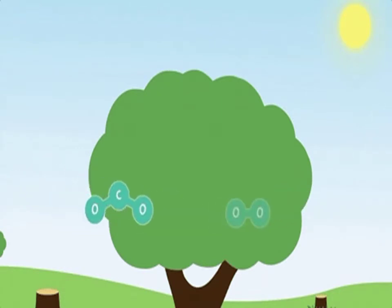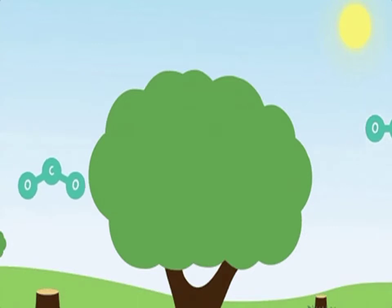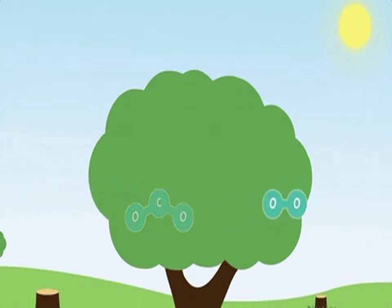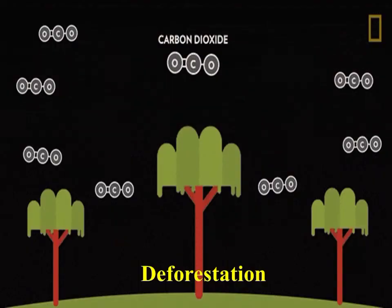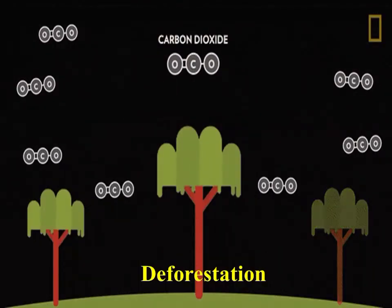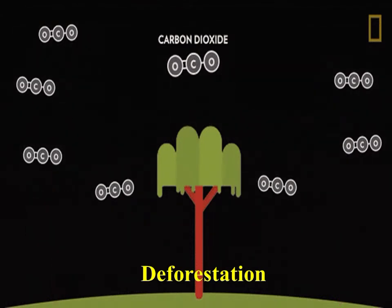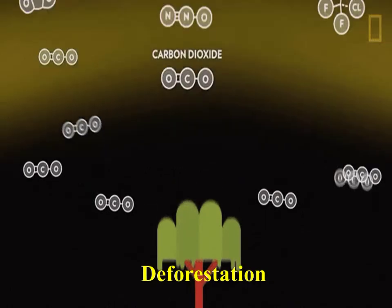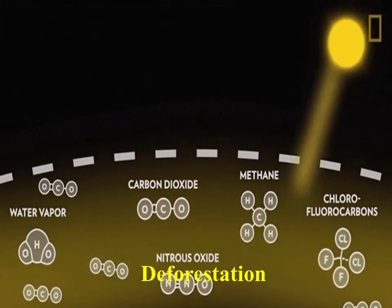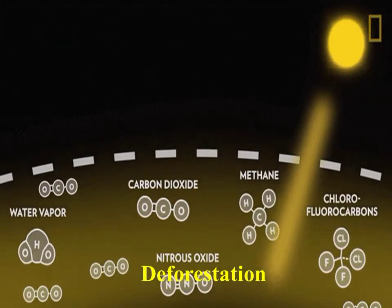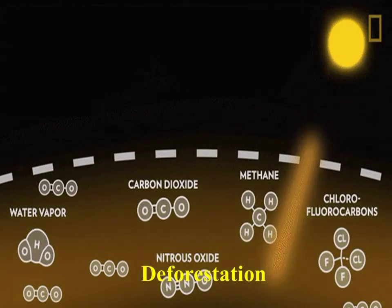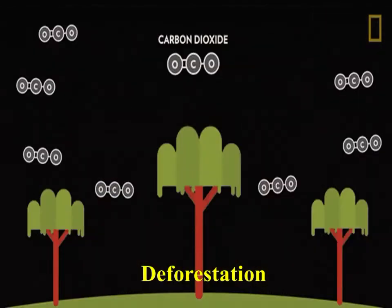The next cause is deforestation. Trees act as the earth's purification system — they absorb carbon dioxide and release oxygen. Cutting down trees not only releases carbon dioxide but also prevents forests from purifying our air. This carbon dioxide released into the atmosphere traps sun rays, which also causes global warming.